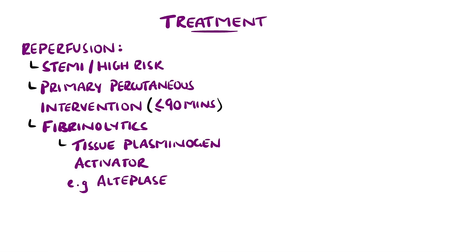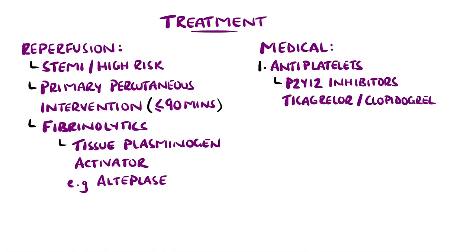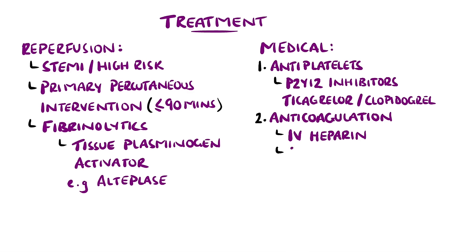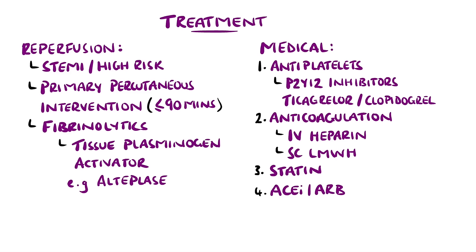Further medical therapy for confirmed STEMI and non-ST elevation acute coronary syndrome includes additional antiplatelets like the P2Y12 inhibitors, ticagrelor or clopidogrel, and anticoagulation such as unfractionated heparin intravenously or low molecular weight heparin subcutaneously. Secondary prevention medications include statins, as not only do they help prevent dyslipidemia, but they also provide plaque stabilisation. An ACE inhibitor or angiotensin receptor blocker are also included, and beta blockers are used if there is evidence of left ventricular systolic dysfunction.